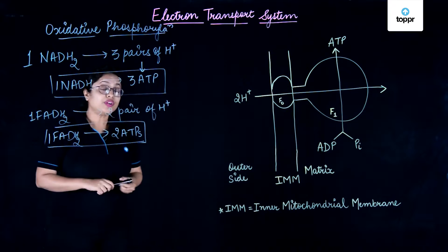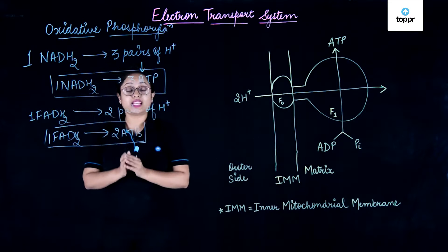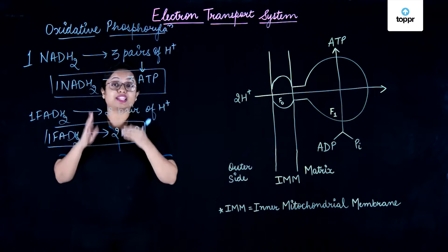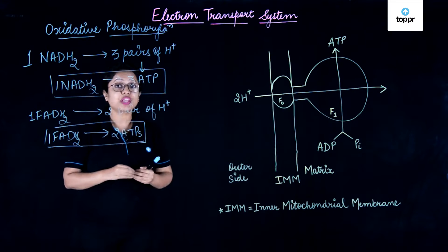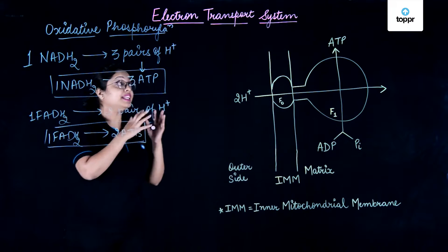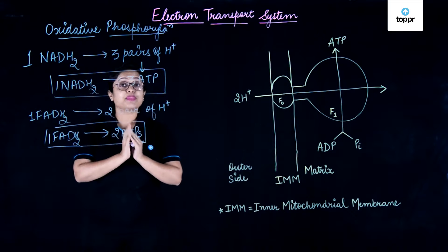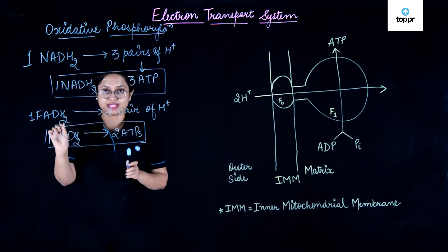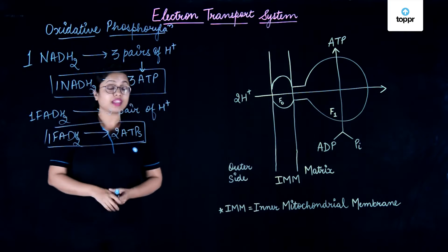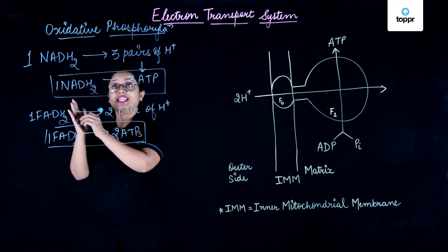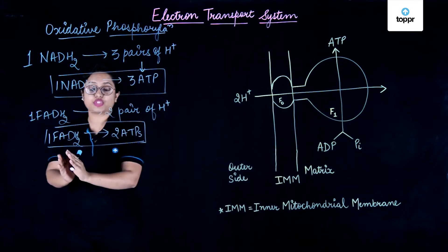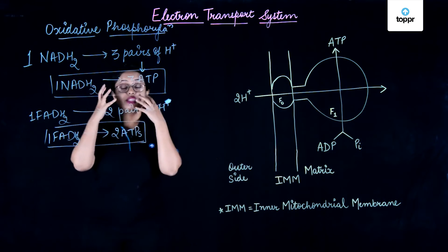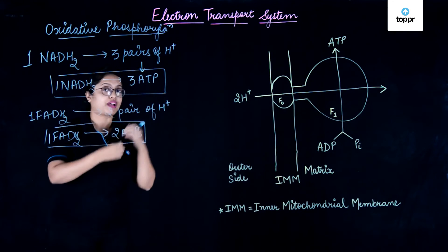In this lesson, we have studied the whole electron transport system, which consists of four complexes and the fifth complex being ATP synthase, where electrons are transported and ATP is generated by proton motive force via the chemiosmotic hypothesis given by Peter Mitchell. We saw that one NADH₂ makes three ATP and one FADH₂ makes two ATPs. This whole process, being an oxidative process coupled with phosphorylation, is known as oxidative phosphorylation.